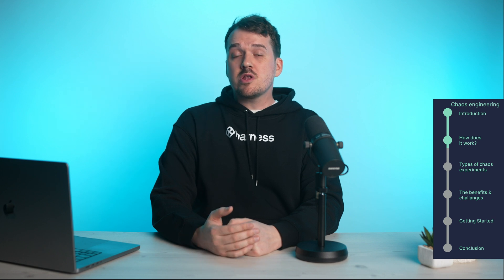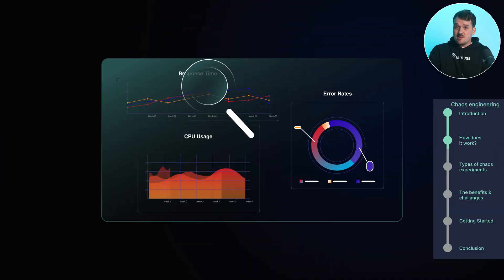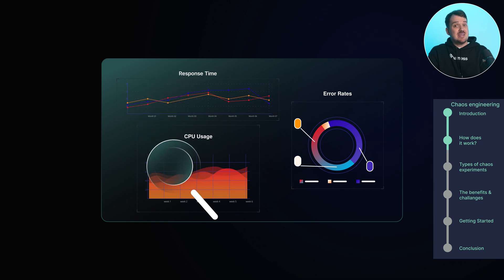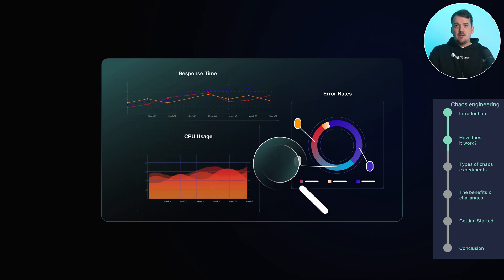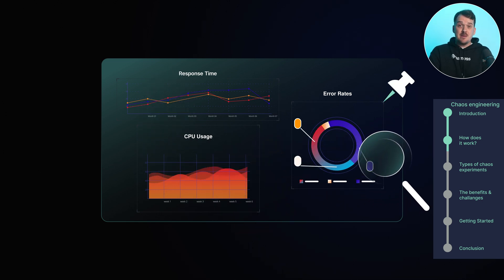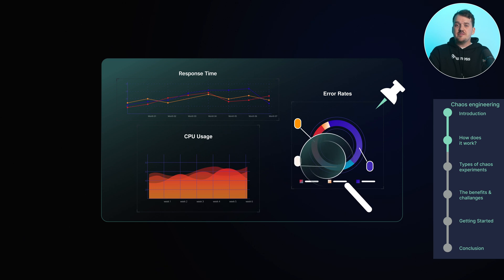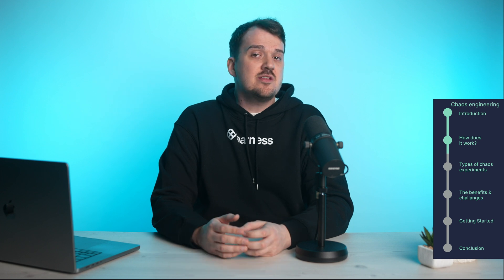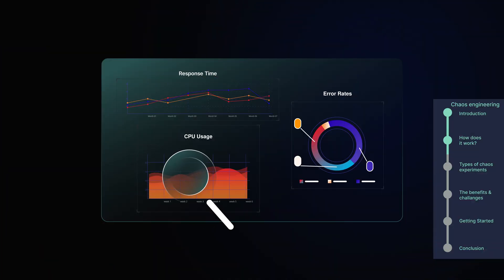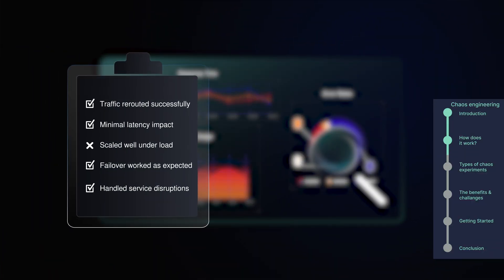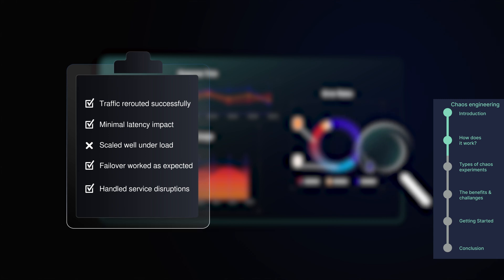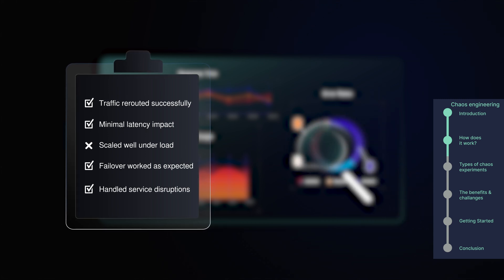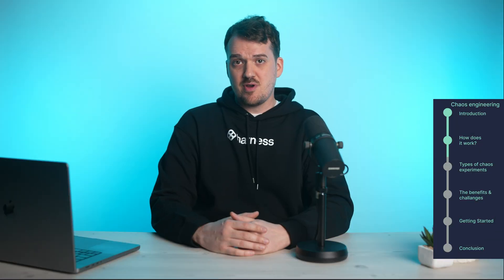During the experiment, you closely monitor the system's behavior. Are response times getting worse? Is resource usage spiking? Are error rates climbing? By gathering this data, you can pinpoint where the system is struggling. Once the experiment is over, you analyze the results. Did the system behave as expected? If not, where did it fall short? From there, you can make improvements — whether it's adding more redundancy, refining failover mechanisms, or optimizing resource allocation for your infrastructure.